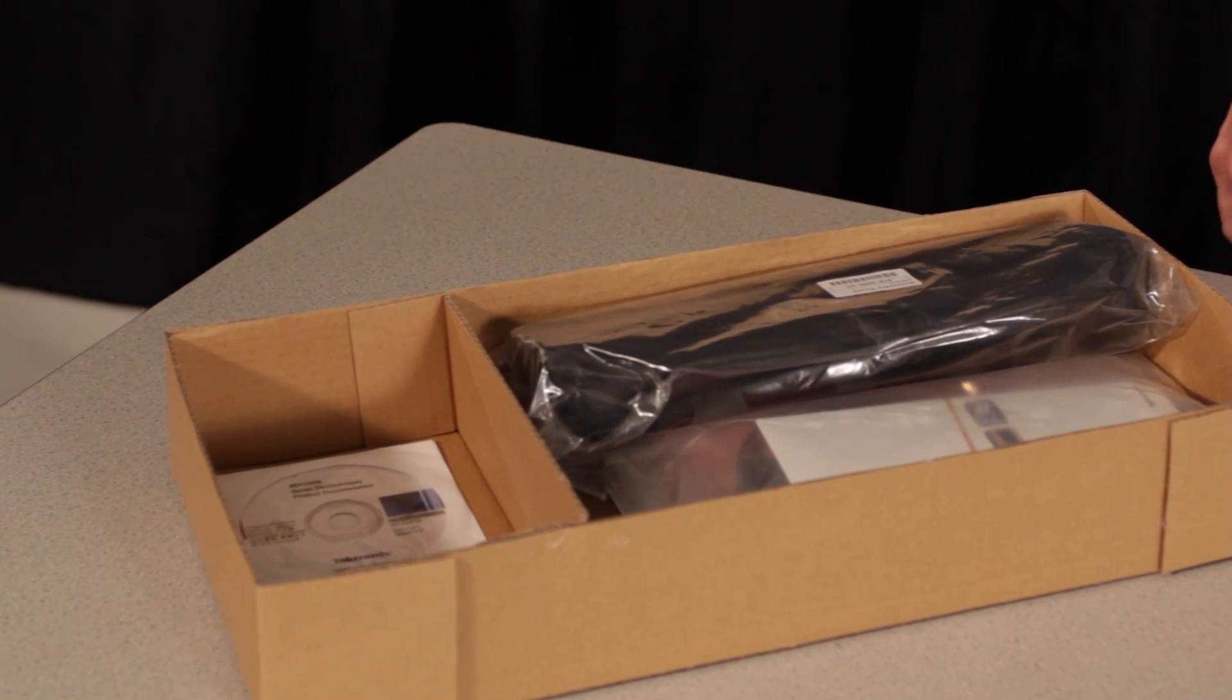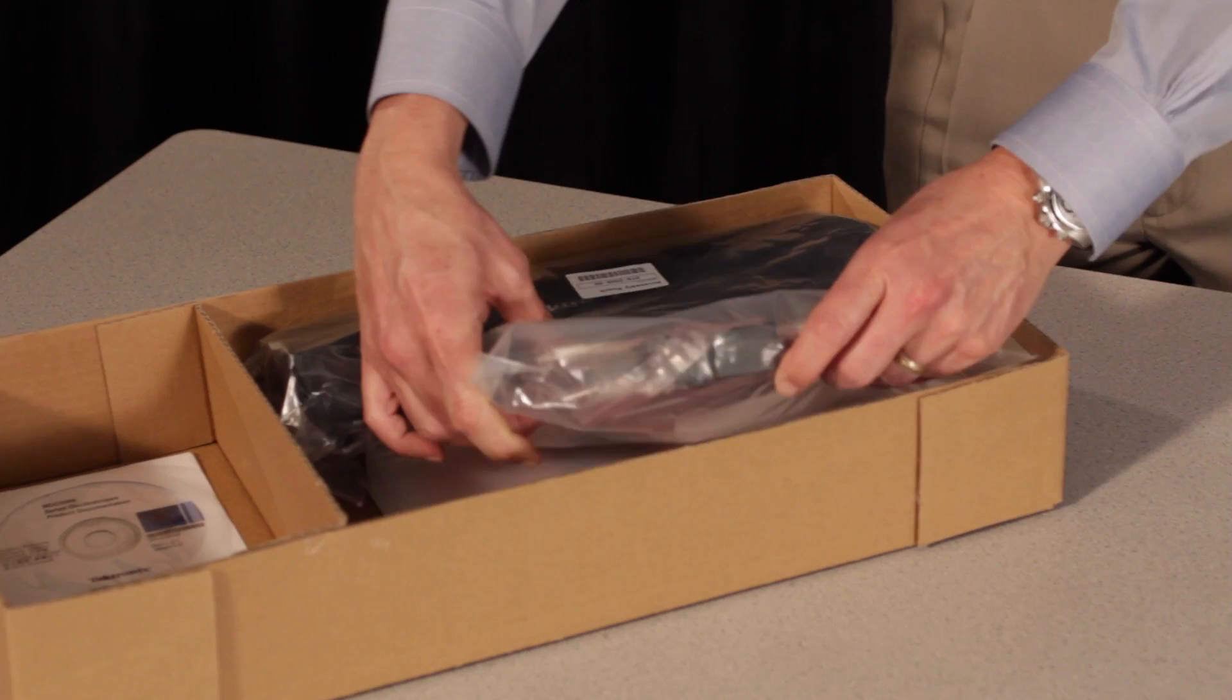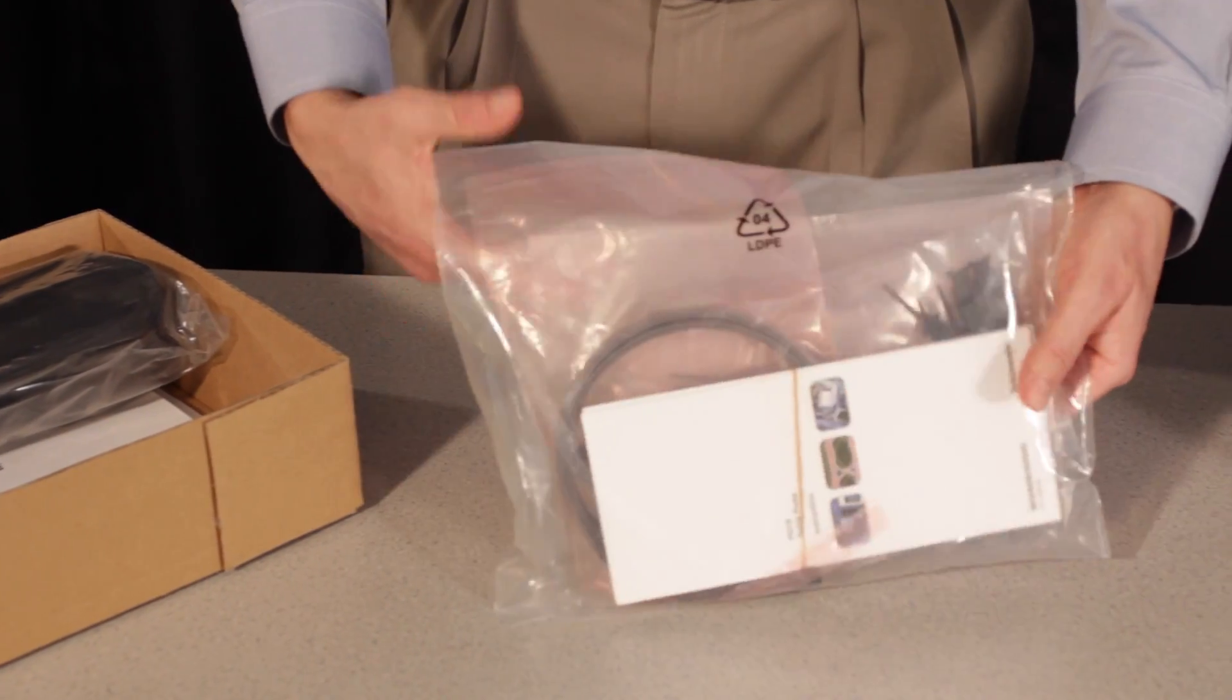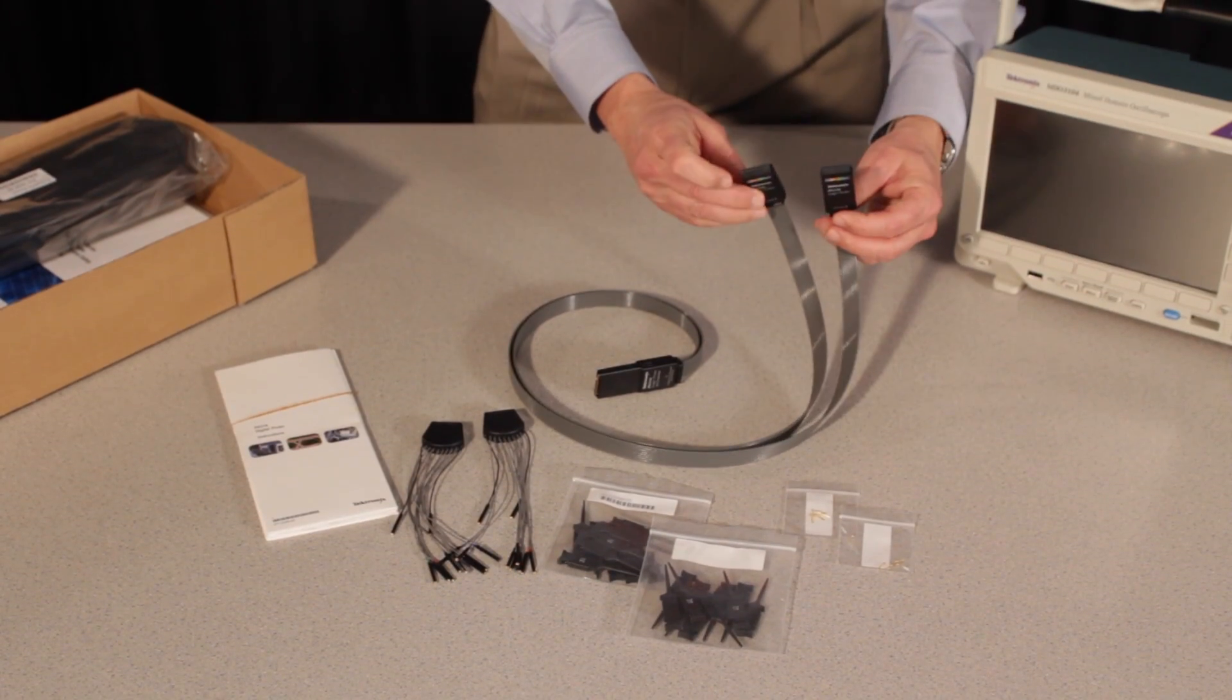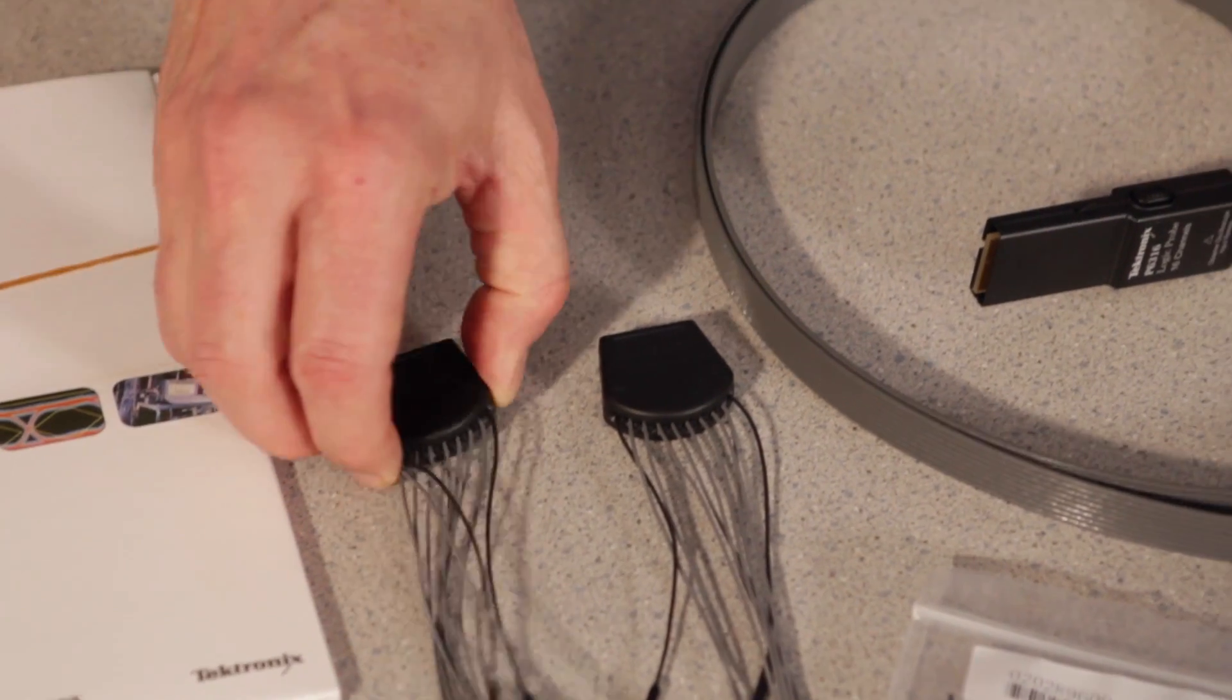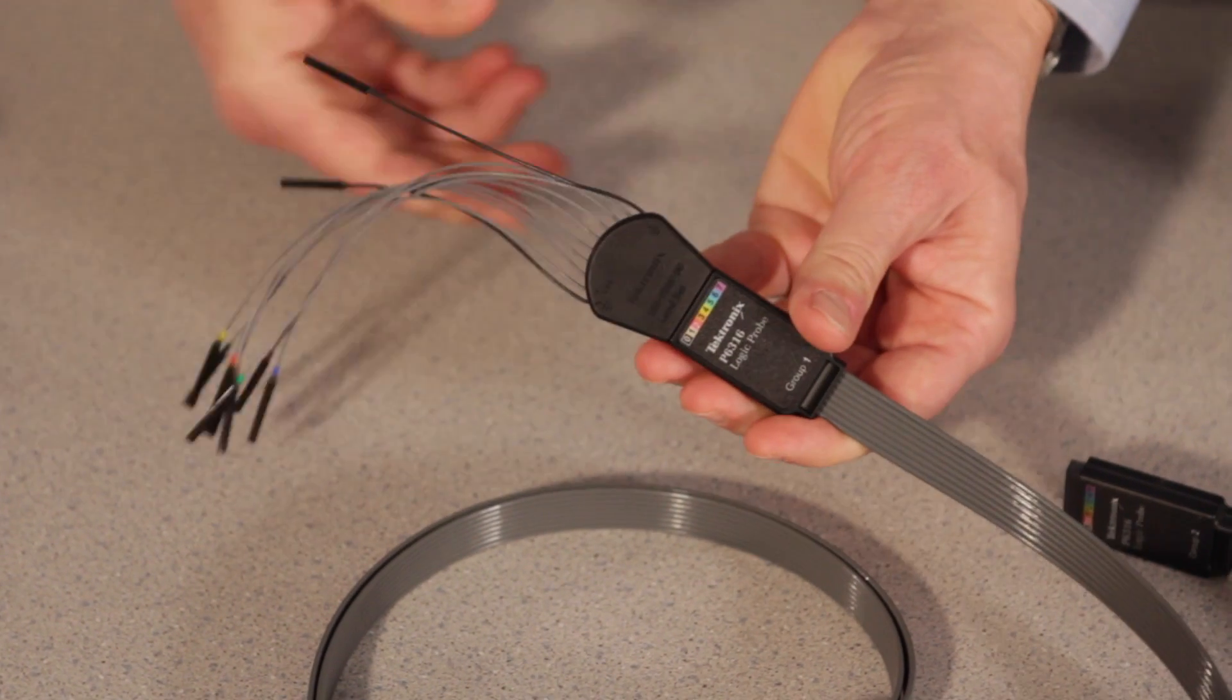Since this instrument has the mixed signal option, it includes a logic probe set for the digital channels and a bag full of accessories. You can see it has two 8-channel headers for connecting to square pins. Each of the two heads has a connection pod that attaches to the head and breaks out the eight channels and two grounds.